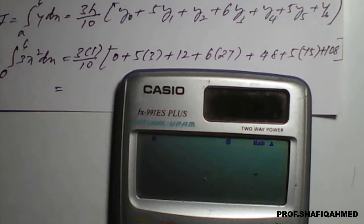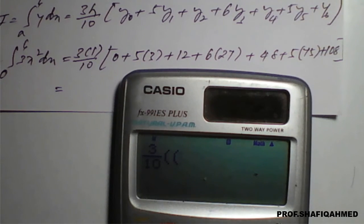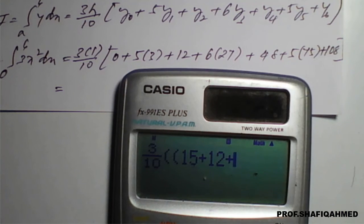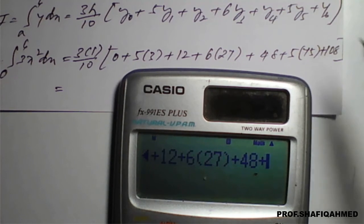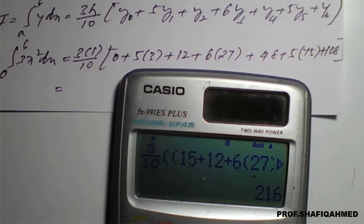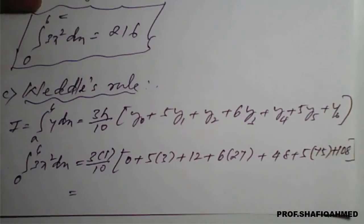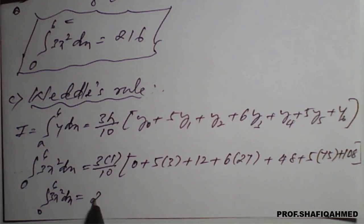So: 3 upon 10, bracket — y0 is 0, plus 5 times y1 is 3 that is 15, plus y2 is 12, plus 6 into y3 is 27, plus y4 is 48, plus 5 into y5 is 75, plus y6 is 108. Close the brackets and the answer is again 216. So Weddle's rule also gives integration 0 to 6, 3x squared dx equals 216.